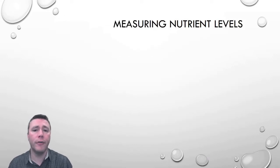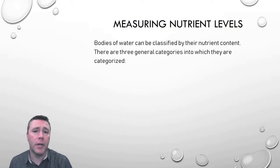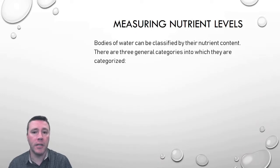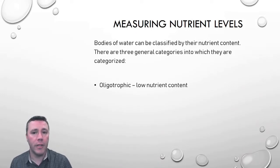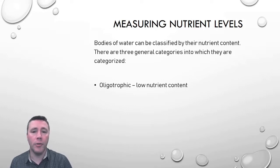First, a few definitions. We measure the nutrient content of bodies of water and classify them based on that nutrient content. The first category is oligotrophic. An oligotrophic body of water, like a pond or a lake, is one that has relatively low nutrient content. Because of that low nutrient content, that also means that its primary productivity, or photosynthetic output, is also low.